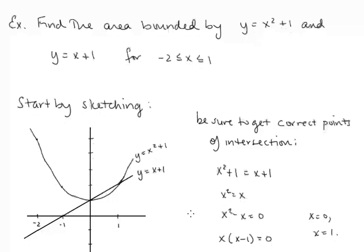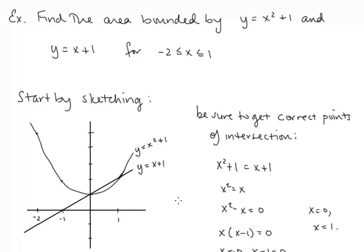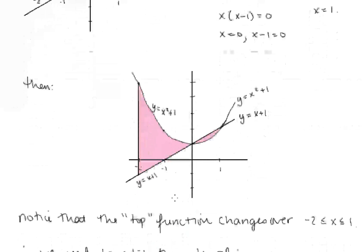Let's look at this example: find the area bounded by y equals x squared plus 1 and y equals x plus 1 for x going from negative 2 to 1. First, we sketch y equals x squared plus 1 (our parabola) and y equals x plus 1 (our line). It's worth setting these two functions equal to find the points of intersection. Solving x squared plus 1 equals x plus 1, we get x equals 0 and x equals 1. The area we're looking for lies between these two curves over the given x values.